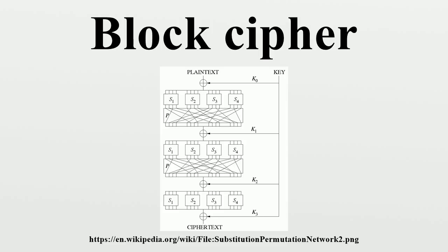For each k, the function ek is required to be an invertible mapping on {0,1}^n. The inverse for E is defined as a function taking a key k and a ciphertext c to return a plaintext value p. For example, a block cipher encryption algorithm might take a 128-bit block of plaintext as input, and output a corresponding 128-bit block of ciphertext.